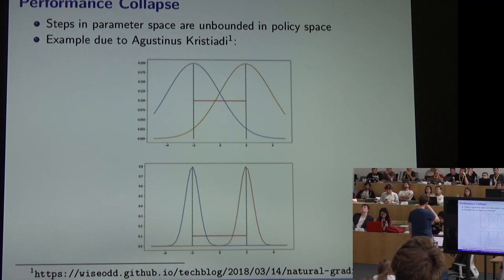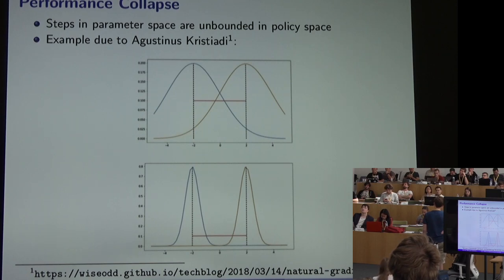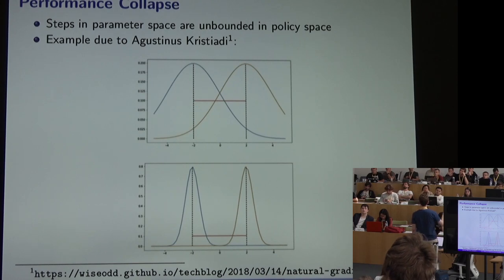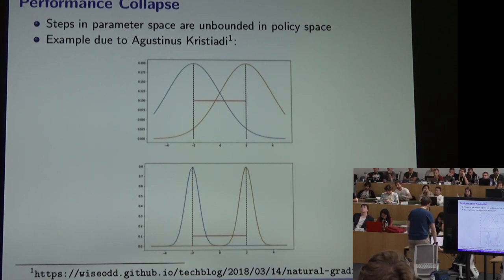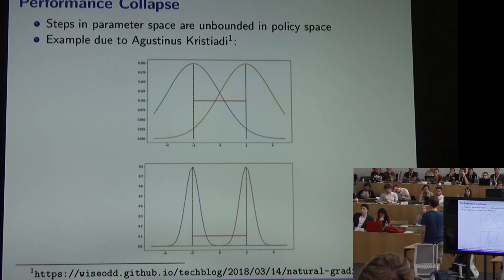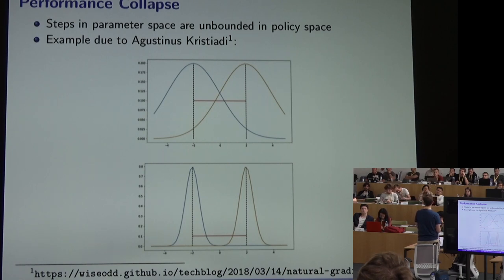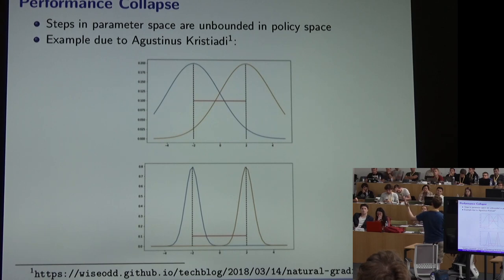Now I want to discuss some more recent innovations in policy gradient methods. First, some motivation: a practical problem called performance collapse. When we take an update step in a policy gradient method, we take a step in parameter space — a change in theta. But theta parameterizes a probability distribution over actions for each state, and we have no handle on the relationship between a step in parameter space and the resulting change in those probability distributions.